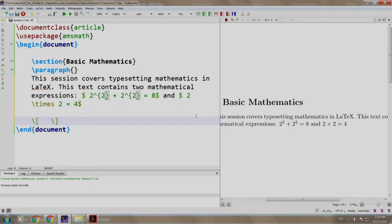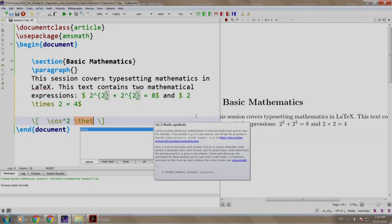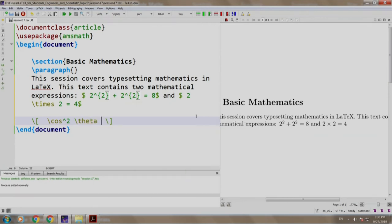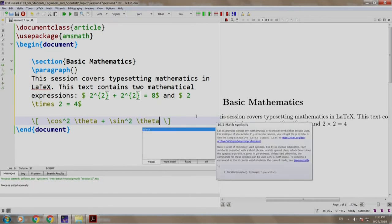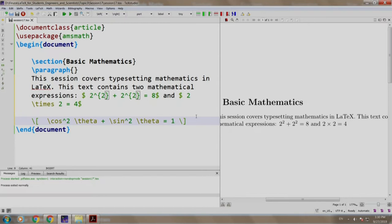Now, let us type another expression slash cos square slash theta plus slash sin square slash theta equal to 1. Build and run. There you go, we have this expression on a separate line centered.